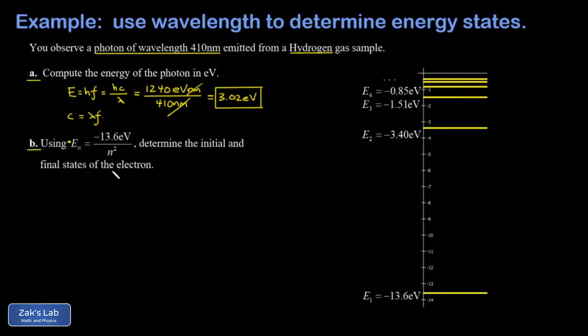And the first four of these are written into the diagram. All I did was sub n, n equals one, two, three, and four. E1 is just negative 13.6 eV divided by one squared, which is negative 13.6 eV. If I divide by two squared instead, I get negative 3.40 eV, and so on.